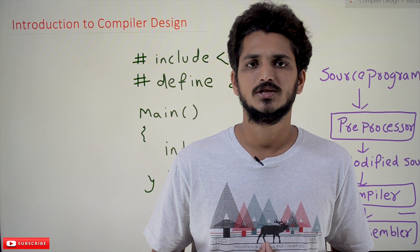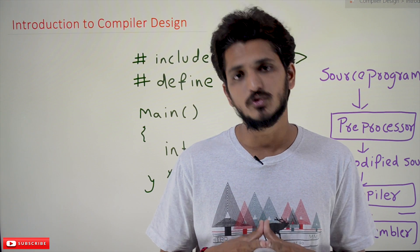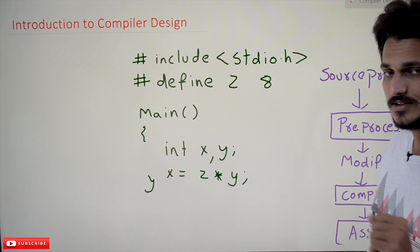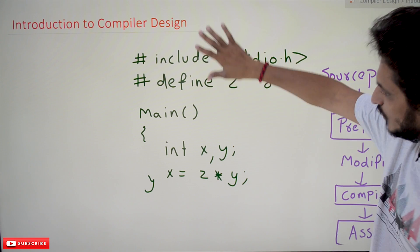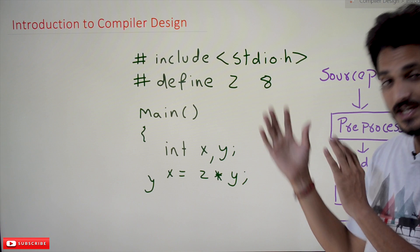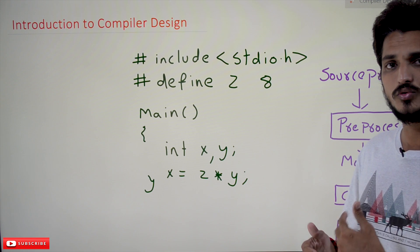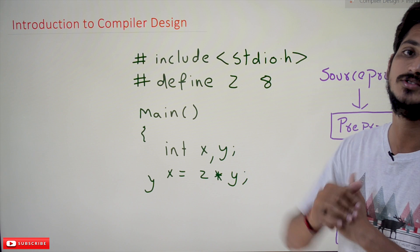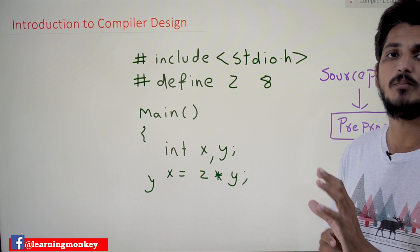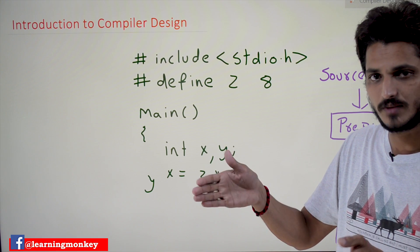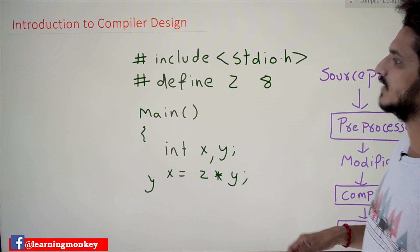The link for the playlist is provided in the description below. Coming to today's class, introduction to compiler design. In our last class we discussed that we need to convert high-level language into machine-level language. In order to do that, not only compiler, different programs are going to execute. What are those programs and what are their roles and responsibilities? That is what we are going to discuss in this class.